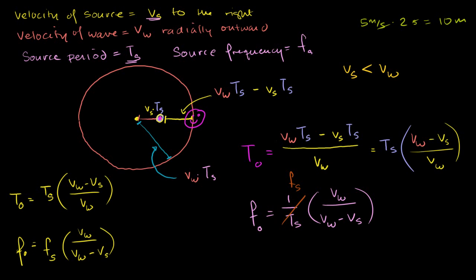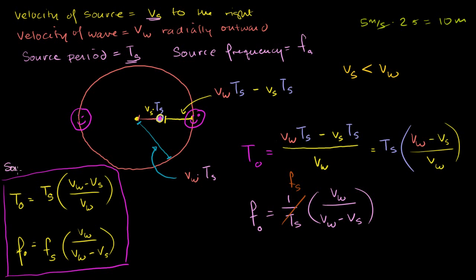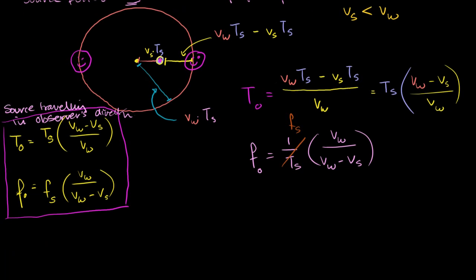Now let's think about the situation where the observer is over here. These formulas we came up with — source traveling in the direction of the observer. Now let's think about the opposite case, where the source is traveling away from the observer. The observer is that guy over there. So when we started off, our source was right here. After exactly one period from the source's point of view, that first crest emitted has traveled radially outward by this distance — the velocity of the wave times the amount of time that's passed. The source will have traveled to the right exactly this distance: its velocity times the time elapsed.